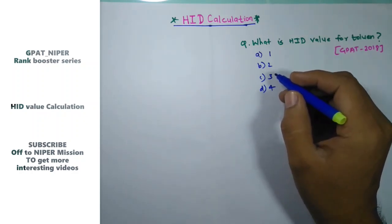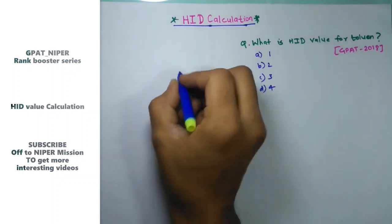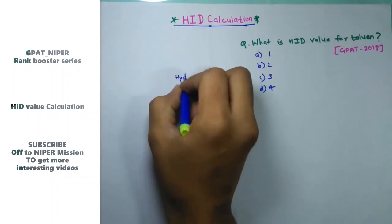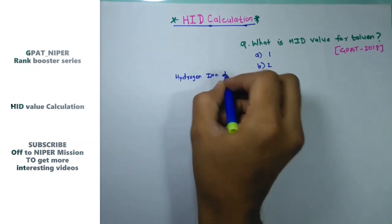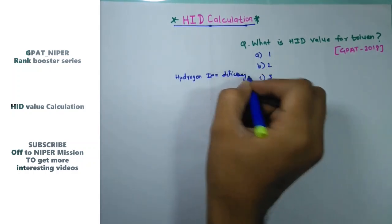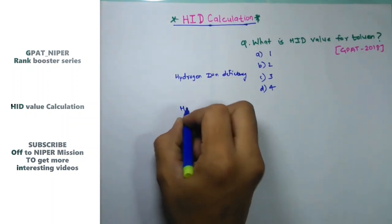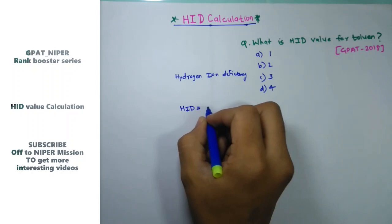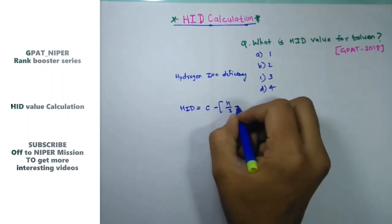So let's start. What is HID? HID is Hydrogen Ion Deficiency. How to calculate the HID value? The formula is: HID = C - H/2 + X/2 - N/2 + 1.